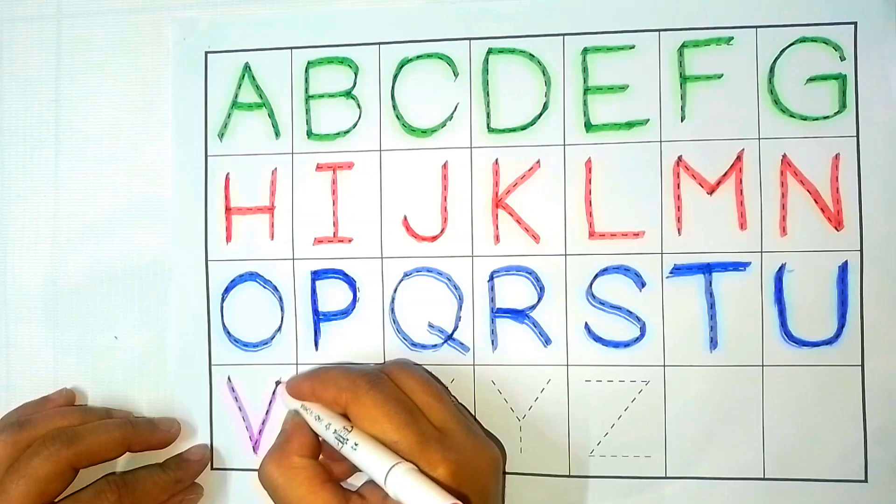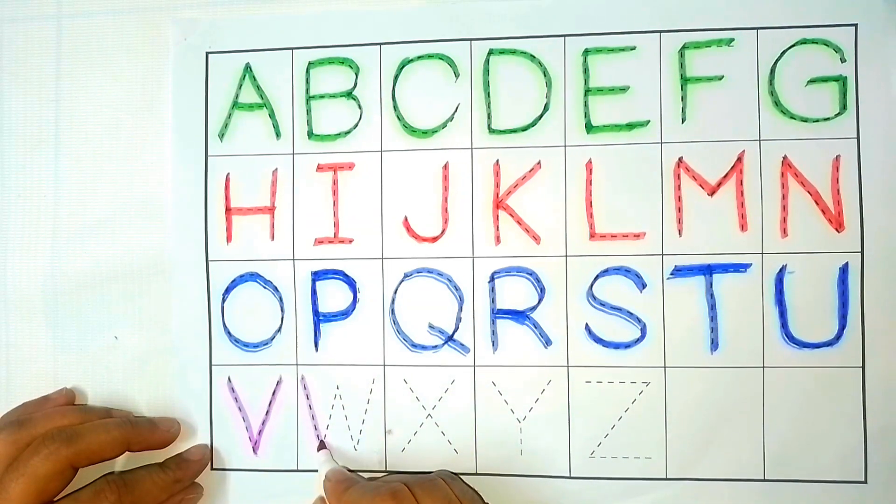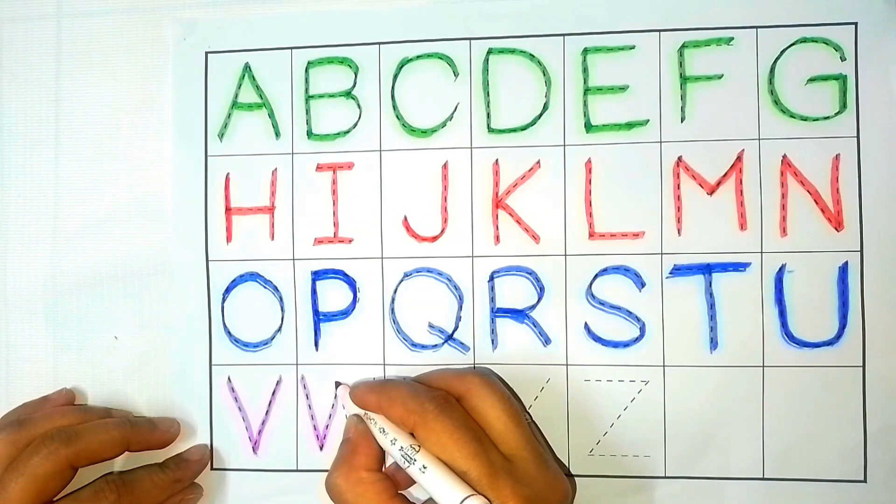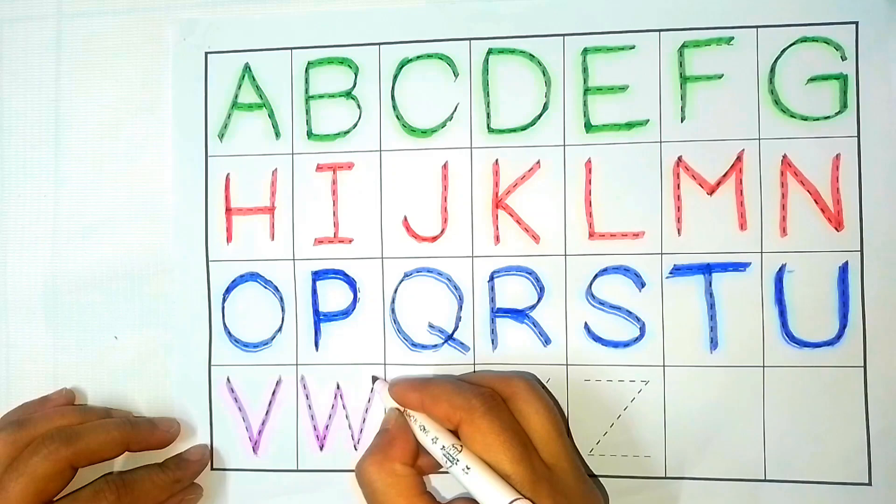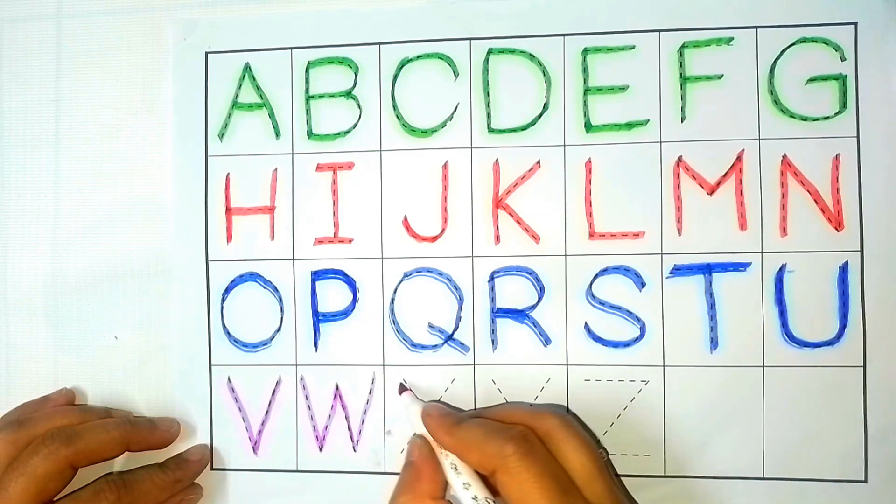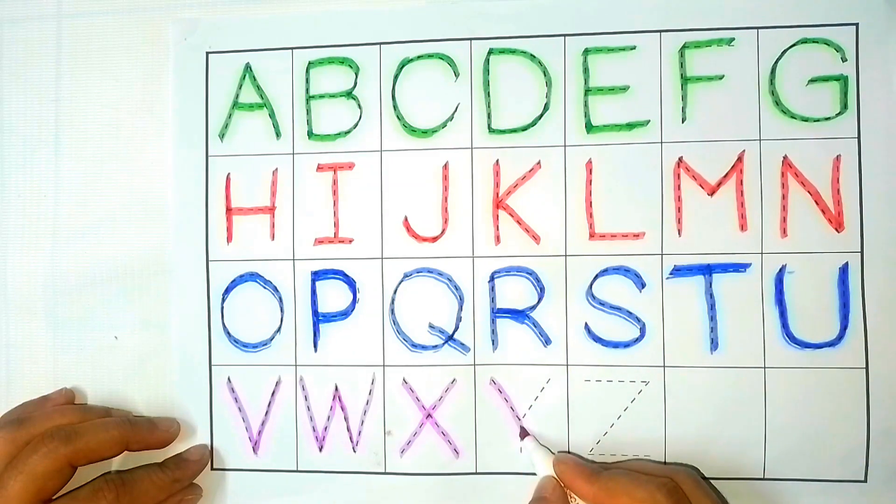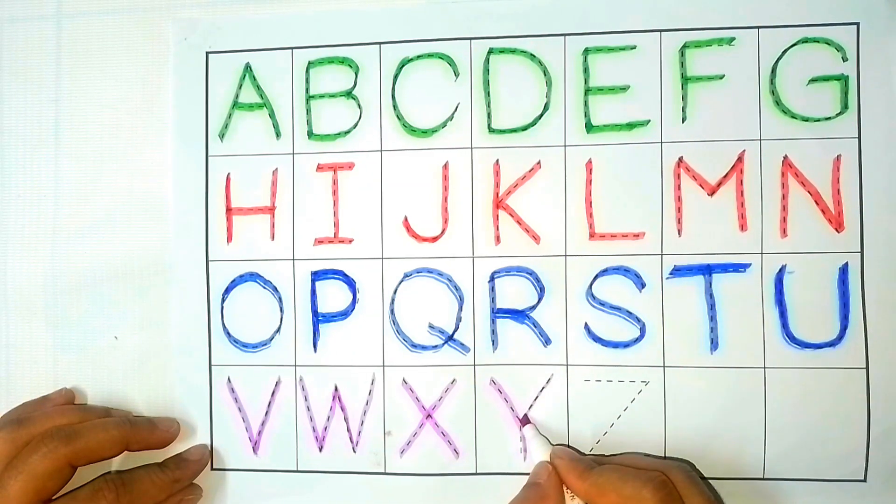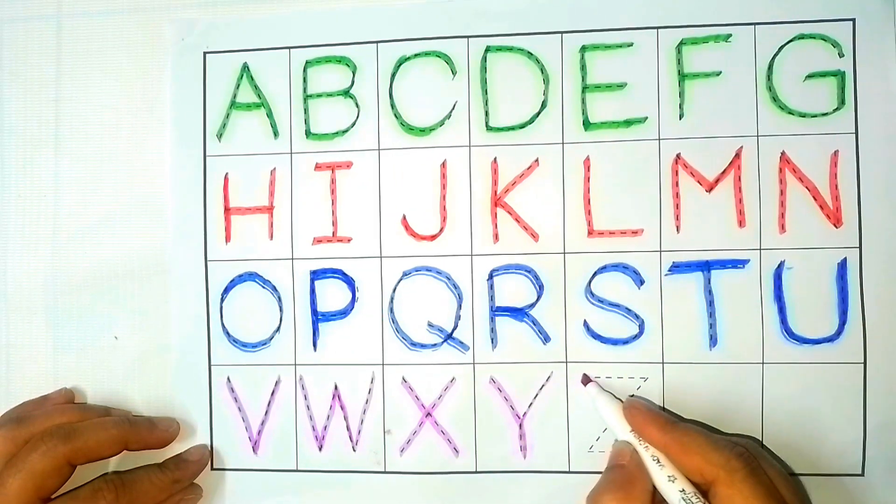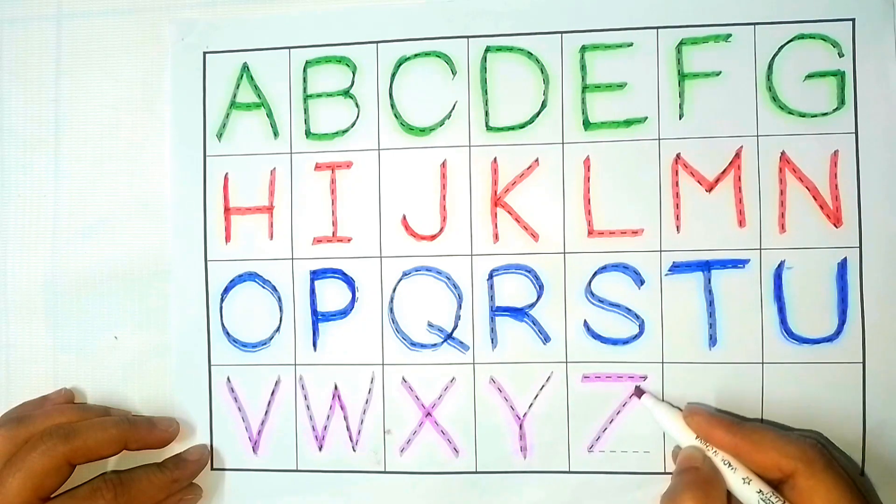Violet color. V, V is for van. W, W is for watermelon. X, X is for xylophone. Y, Y is for yellow. Z, Z is for zebra.